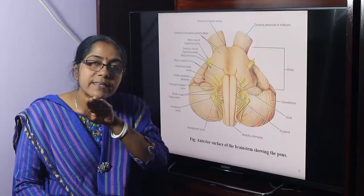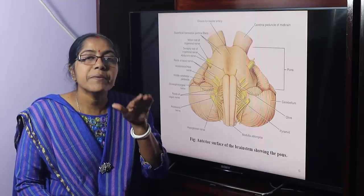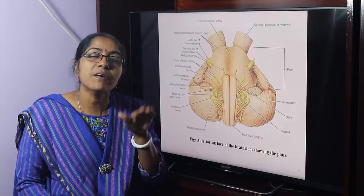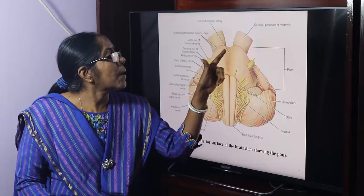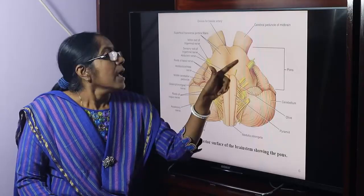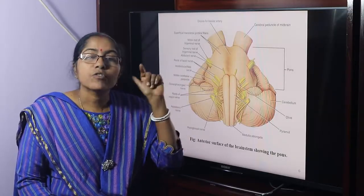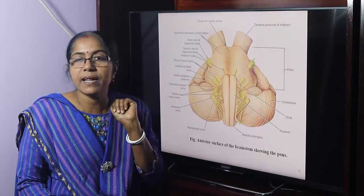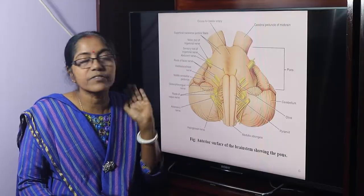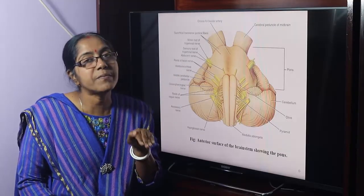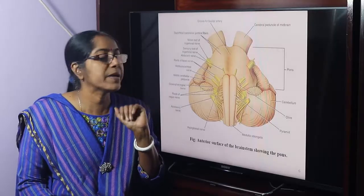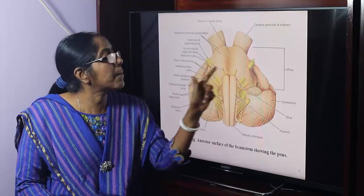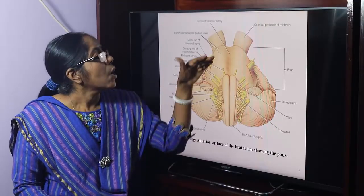The dorsal surface is covered by the cerebellum and is separated from it by the cavity of the fourth ventricle. The pons is part of the brainstem and also part of the hindbrain. The pons, cerebellum, and medulla constitute the hindbrain, and the cavity of the hindbrain is termed the fourth ventricle.